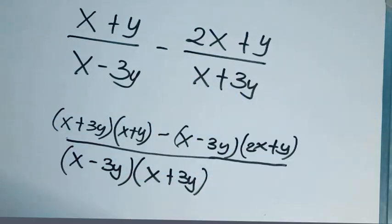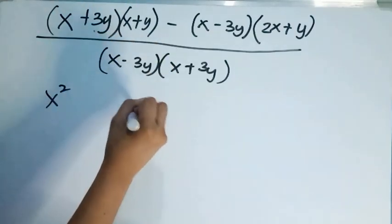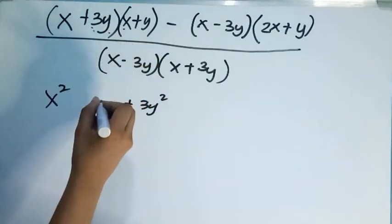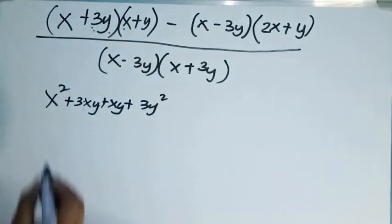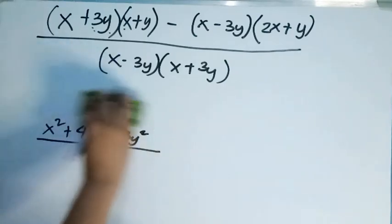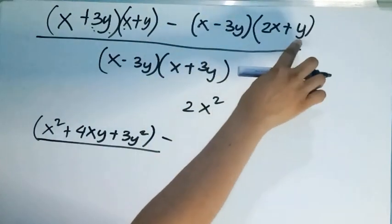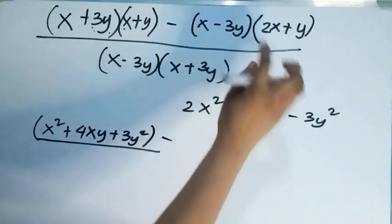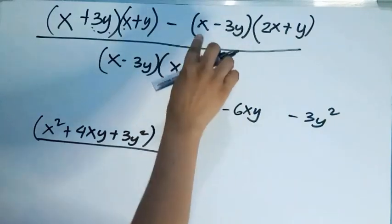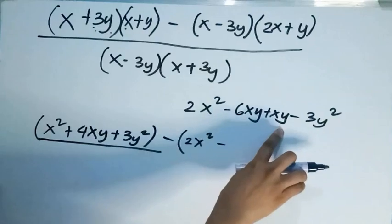Let us multiply the numerators. For the first term, multiply (x plus y) by (x plus 3y): x times x gives x squared, 3y times y gives 3y squared — which is positive y squared. For the middle term, 3y times x gives 3xy plus x times y gives xy. Combining: x squared plus 3xy plus xy equals x squared plus 4xy plus y squared. For the second term, x times 2x gives 2x squared, negative 3y times y gives negative y squared, and the middle terms give negative 6xy plus xy. Combining like terms: 2x squared minus 5xy minus y squared.